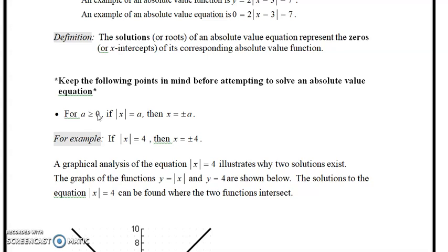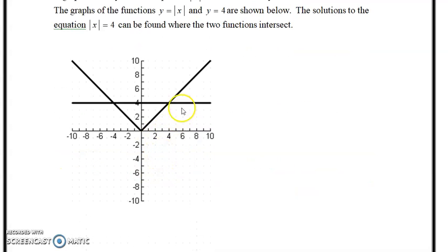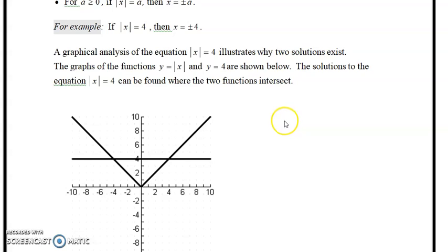So for example, if you have the absolute value of x is equal to 4, that means that x can be plus or minus 4. I've done this with a 2x2 system. I've had y equals f of x. I have y equal to 4. And the intersection, you can see two points here, negative 4 and positive 4. So that illustrates that example.